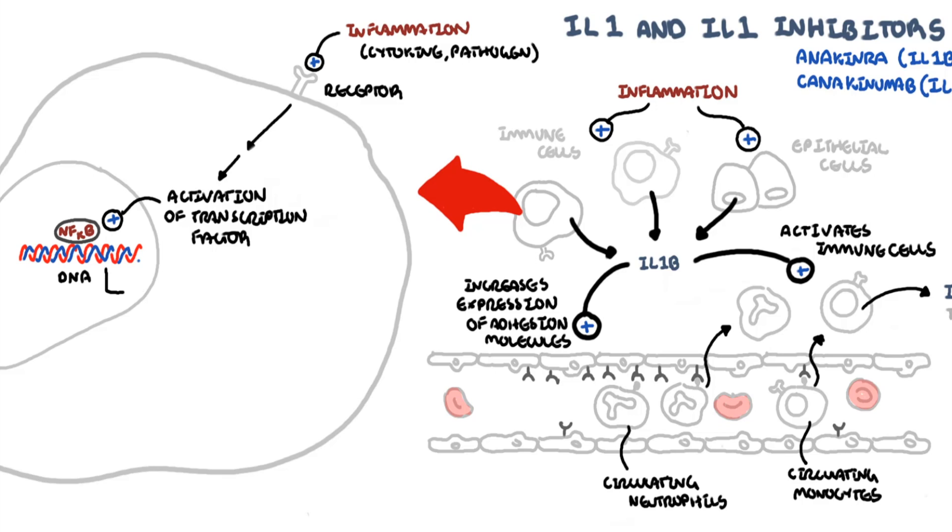NF-kappa B reads genes which will ultimately make proteins TNF-alpha and pro-interleukin-1a and pro-interleukin-1b. TNF-alpha is a pro-inflammatory cytokine, and so are the interleukins, but these interleukins are not active yet.